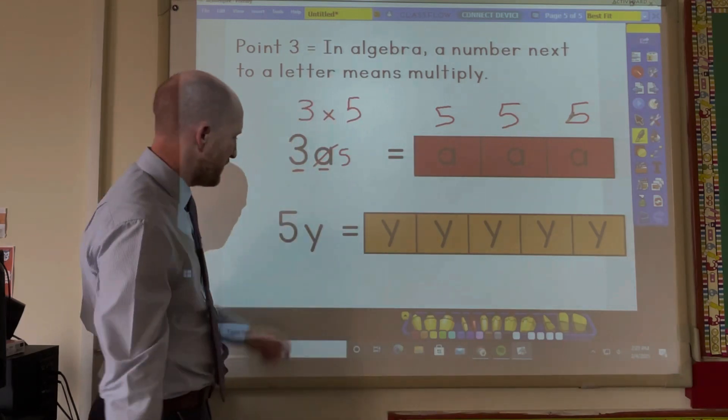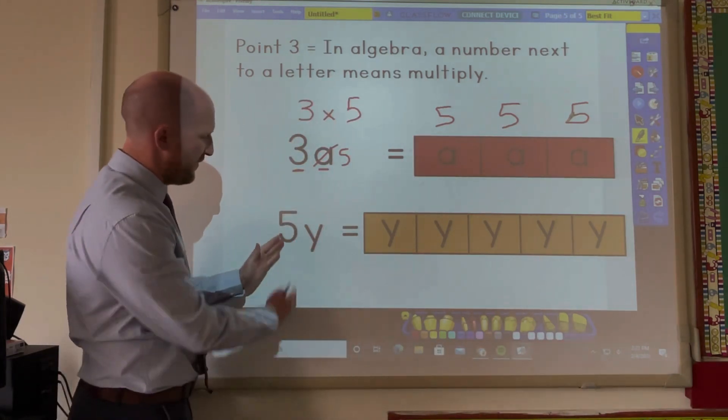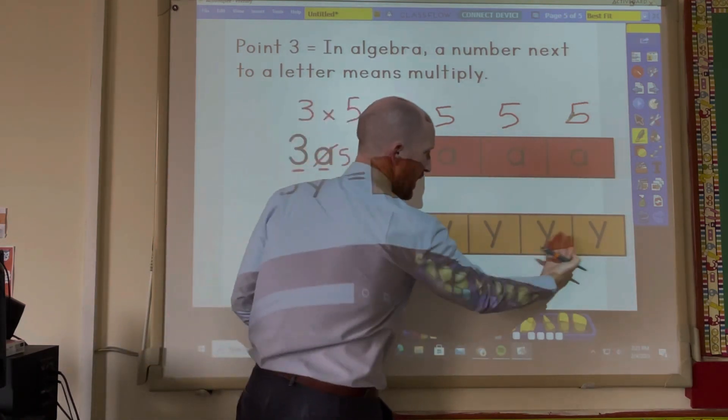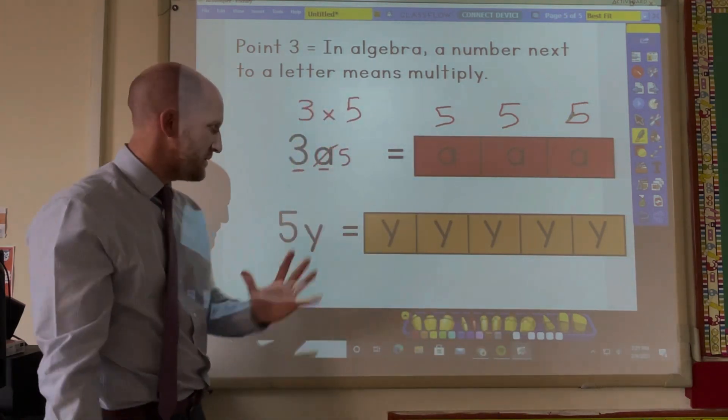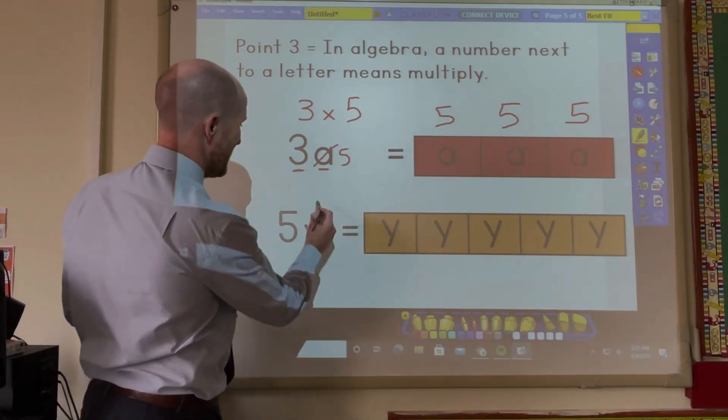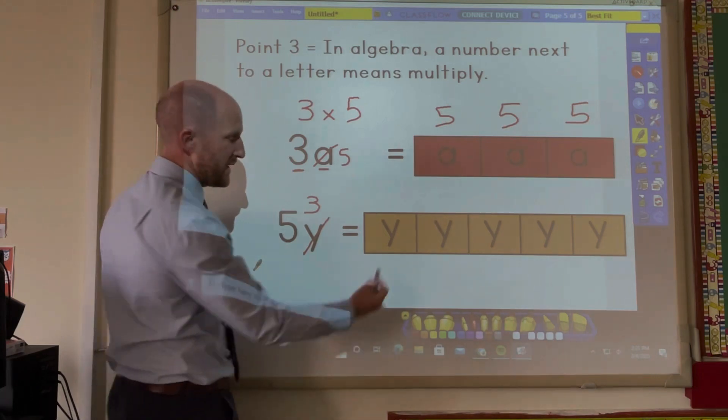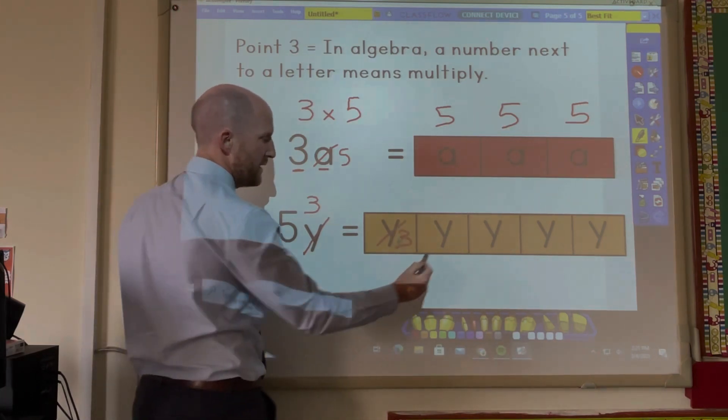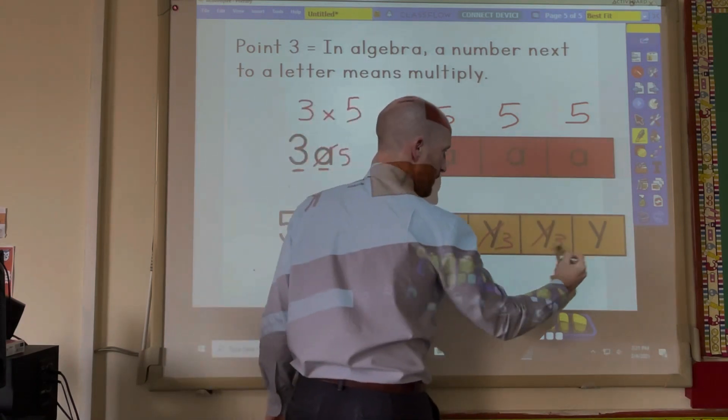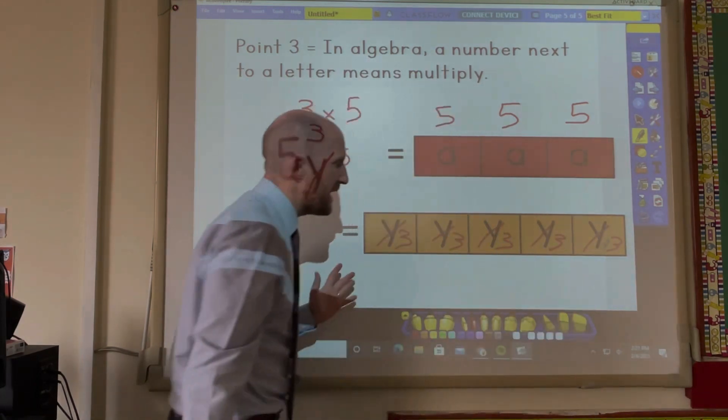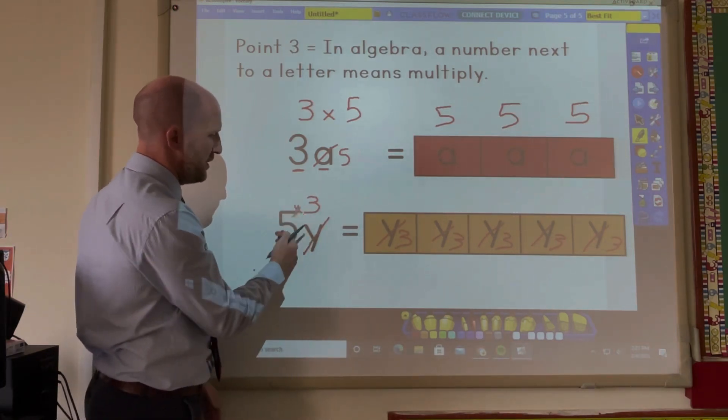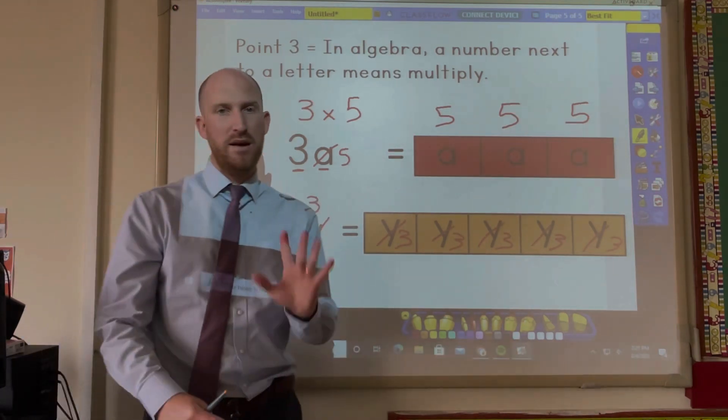Have a look at this one. 5Y. So 5Y can be represented like this. Y, Y, Y, Y, Y. 5 times. Now if I find out that Y is actually 3, then I can say, well, 3, 3, 3, 3, 3. And I can add all those numbers up. But I know it's much quicker to go 5, multiply by 3.